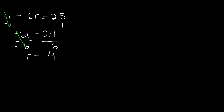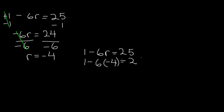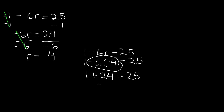Now let's check our answer. 1 minus 6r is equal to 25. Let's rewrite this equation using our answer: 1 minus 6 times negative 4 is equal to 25. Negative 6 times negative 4 gives us positive 24, so 1 plus 24 is equal to 25. 25 is equal to 25, so our answer, r is equal to negative 4, is correct.